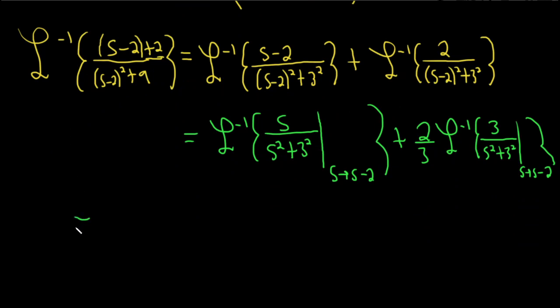All right, let's finish up. This first one's going to be cosine of kt, which is 3t, and then times... This is going to give us an exponential. It's going to give us e to the 2t. I'm going to put it in the front. And then plus 2 thirds. This will give us an exponential, e to the 2t.